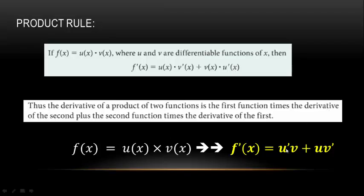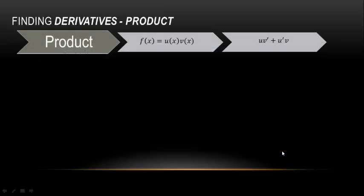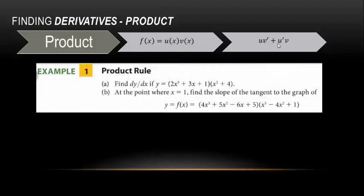In shorthand notation: u·v' + u'·v. Let's look at a couple of problems. Note that dy/dx, y', and f'(x) are all the same notation. In this first problem we're finding the derivative at a specific point, so the answer will be a value, not a formula. Also note it asks for the slope of the tangent — which is the same as finding the derivative.